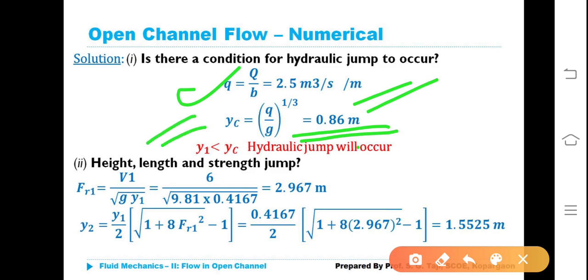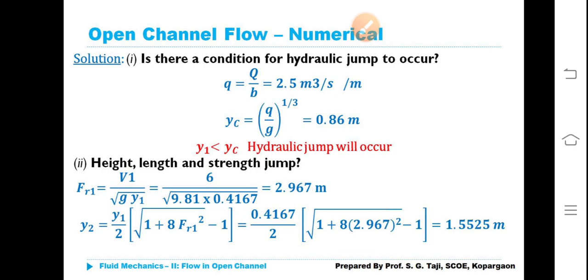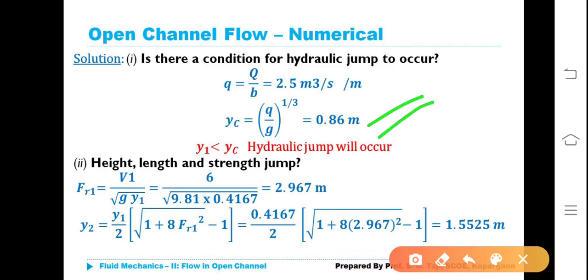Since Y1 = 0.4167 m is less than YC = 0.86 m, the flow before the jump is supercritical. Hence, hydraulic jump will occur. We now need to find the height, length, and strength of the jump.